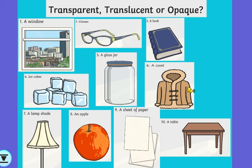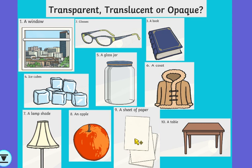A coat — that looks like a nice warm coat for January. A coat would definitely be opaque; you would not be able to see any light through it. A light shade is translucent because you would see some of the light coming through. An apple would be opaque — if I held a torch on this side of the apple you would not be able to see the light on the other side. With a sheet of paper, you would be able to see some of the light through it — hold a piece of paper up to a light in your house and you'll see the light coming through, which means it's translucent. And a table made of wood is definitely opaque; you cannot see through wood. Obviously if the table were made of see-through plastic that would change things, but the wooden table is opaque.